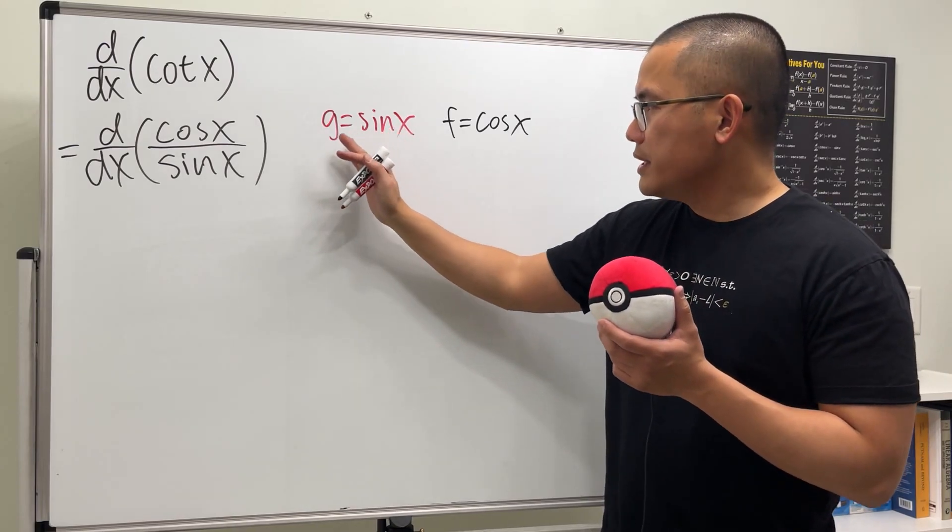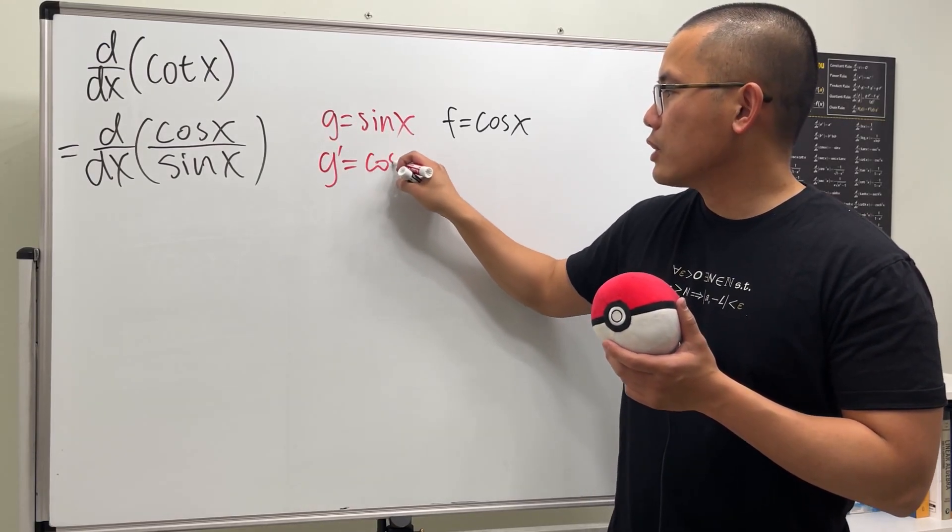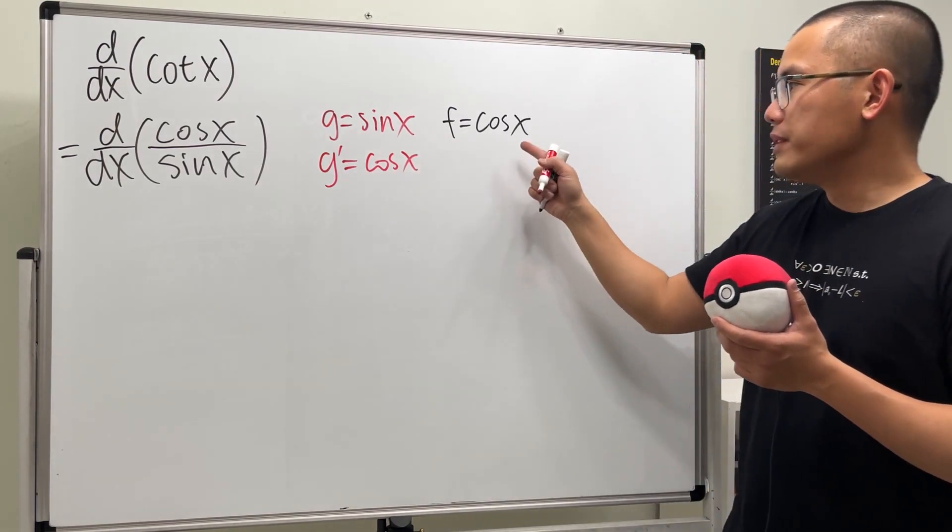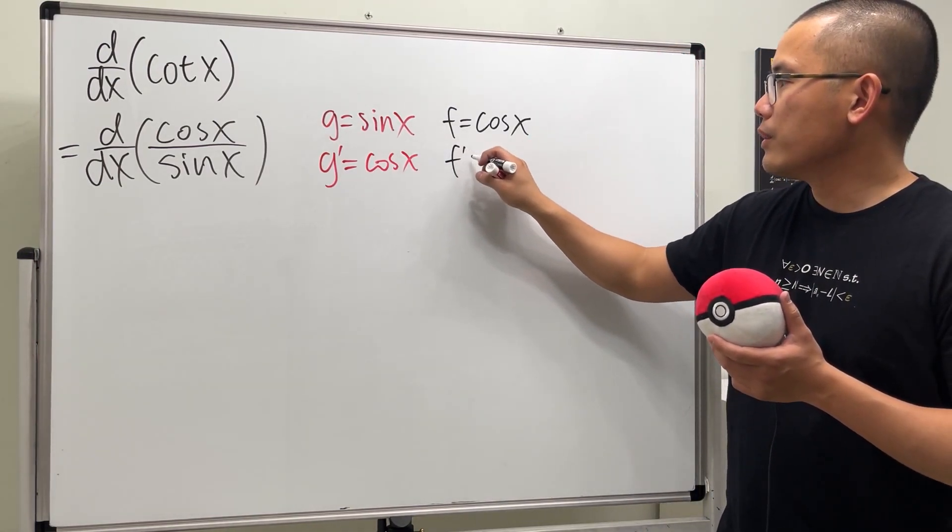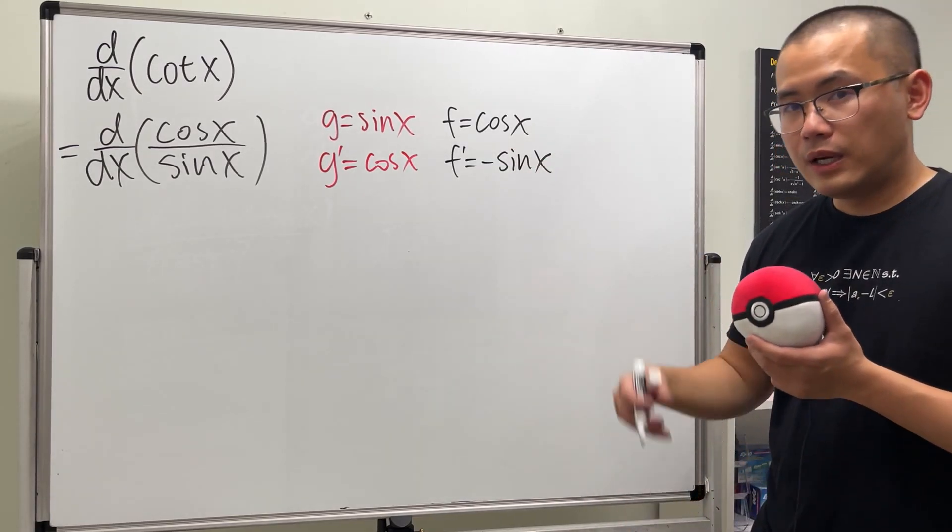All right, the derivative of sinx is positive cosx. And then the derivative of cosx, well, this right here will give us negative sinx. And now we have the ingredients.